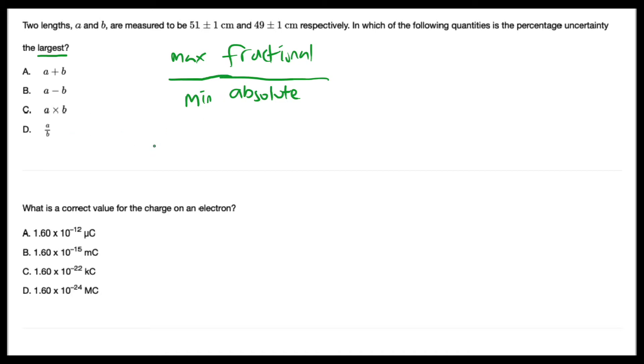So here we know A × B is definitely greater than A ÷ B, and they have the same fractional uncertainty. So we know C is not possible.